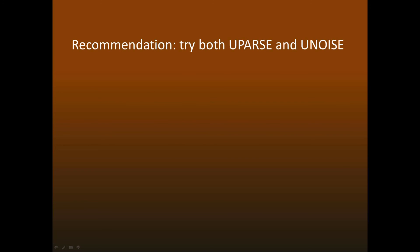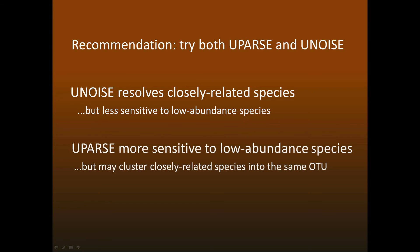I believe that the best approach is to analyze diversity using both UPARSE and UNOISE and check if the results are consistent. UNOISE has the advantage that it's more sensitive to closely related species, but this comes at the expense of being less sensitive to low-abundance species. On the other hand, UPARSE is more sensitive to low-abundance species, but may lump closely related species together into the same OTU.